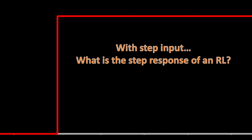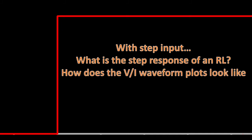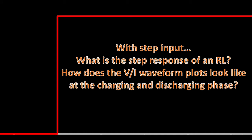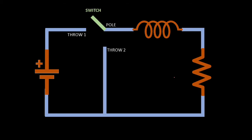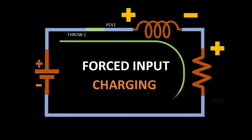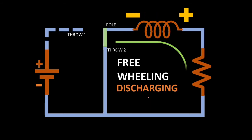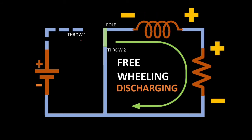Then we'll see how the voltage and current waveforms look during the charging and discharging phase. We will use the series RL circuit with a switch configuration that will allow us to have a forced input, which will determine our charging phase. The next one is the pre-wheeling response — in this case, we are disconnected from the source, and the energy stored in the inductor will be our source to the circuit. We call it the discharging phase.